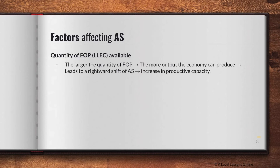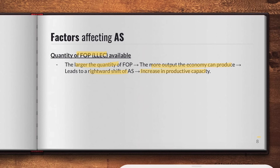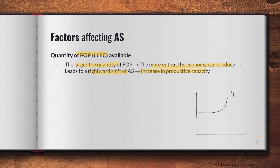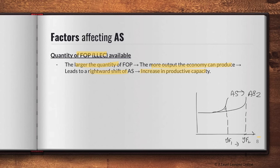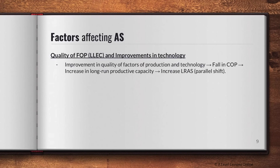The third factor is the quantity of factors of production available. The larger the quantity of factors of production, the more output the economy can produce. This leads to a rightward shift of AS and hence an increase in productive capacity — your Yf increases from Yf1 to Yf2. Take note of the difference: an increase in cost of production does not change productive capacity, but an increase in the quantity of factors of production does shift full employment outward.